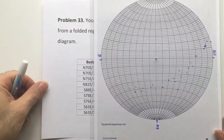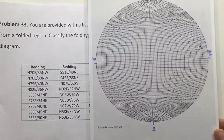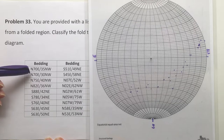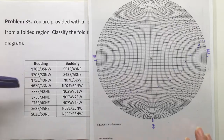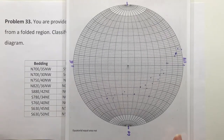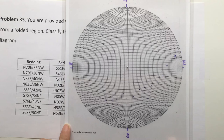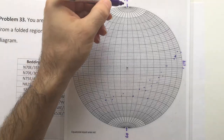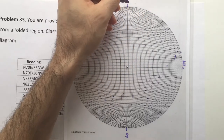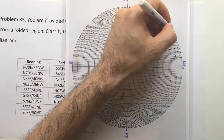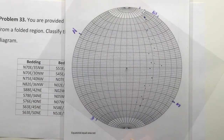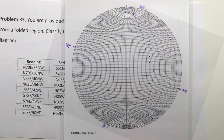I'm going to plot the first two bedding attitudes now. The first bedding is North 70 East — from north you go 70 degrees towards east: 10, 20, 30, 40, 50, 60, 70 — and then you place that along the north-south direction.